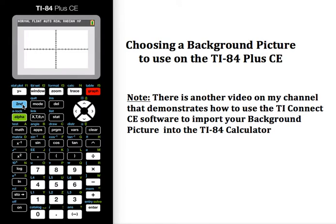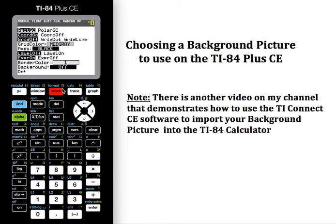The first thing I need to do is go into a menu. I'm going to do 2nd, Format. That's going to give me a great big long menu. All the way down at the bottom is the background menu. I'm going to arrow up as opposed to arrow down just because it's going to get me there faster.